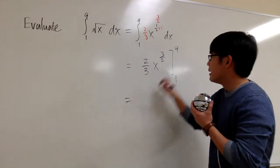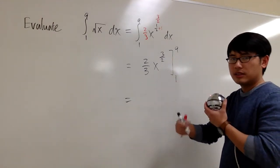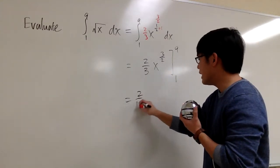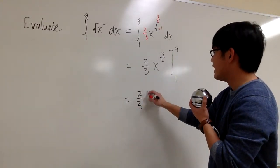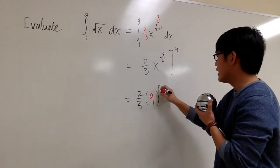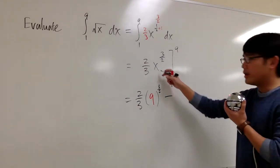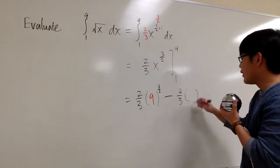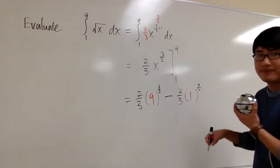Plug in 9 into x and plug in 1 into x, then subtract. For the first part, we have 2/3 times 9 raised to the 3/2 power. And then minus, plugging in 1 into x, we have 2/3 times 1 to the 3/2.